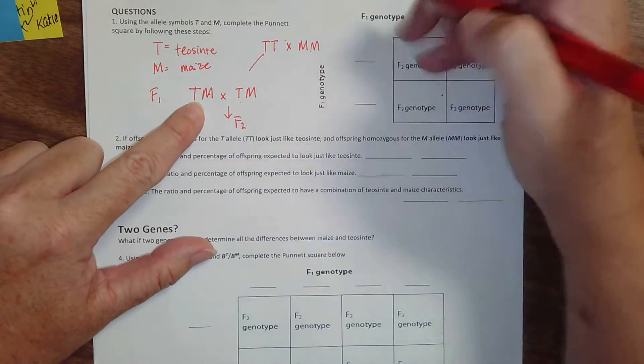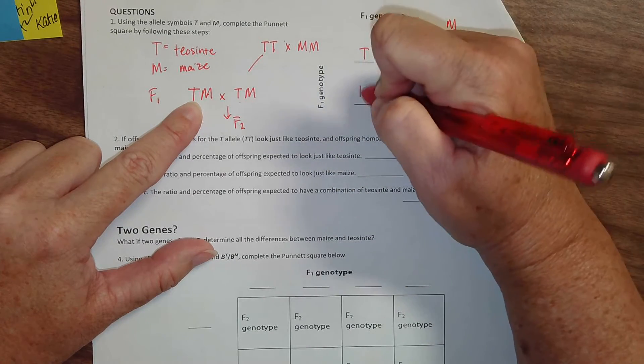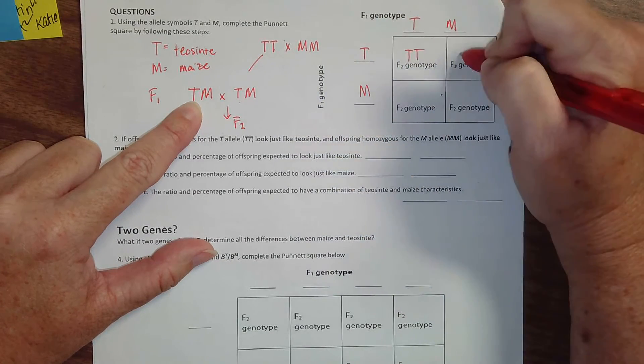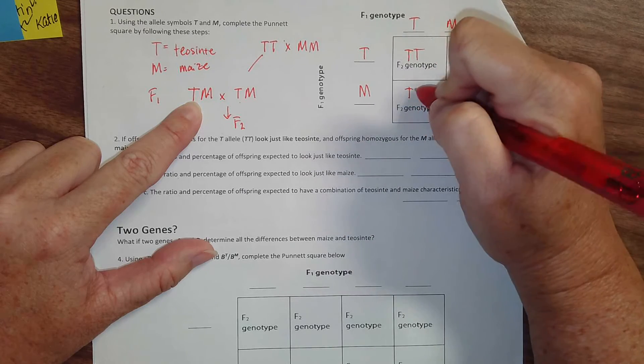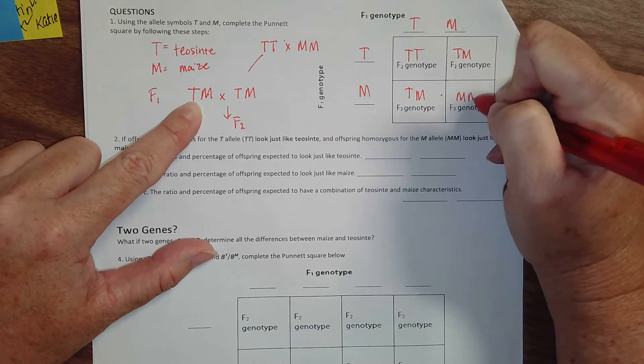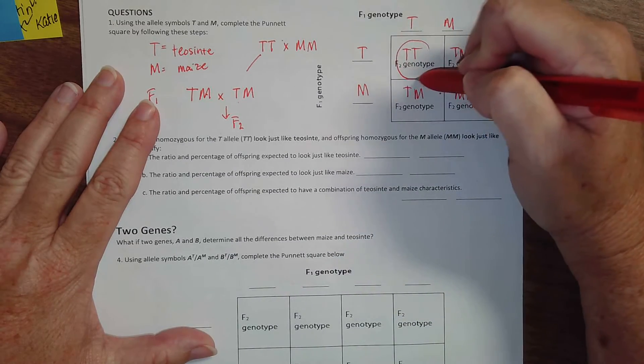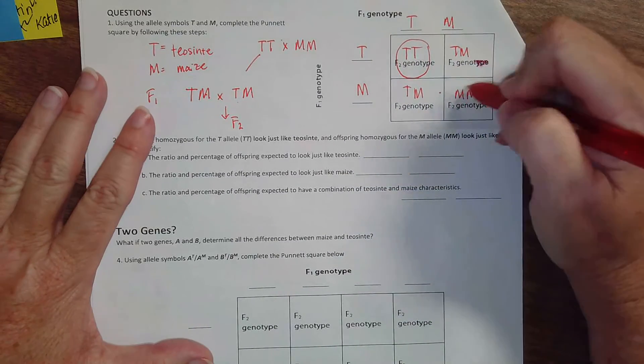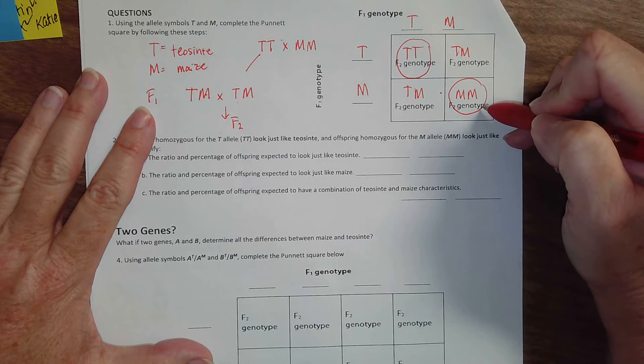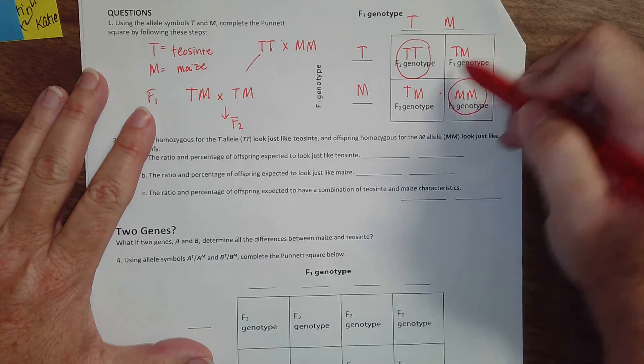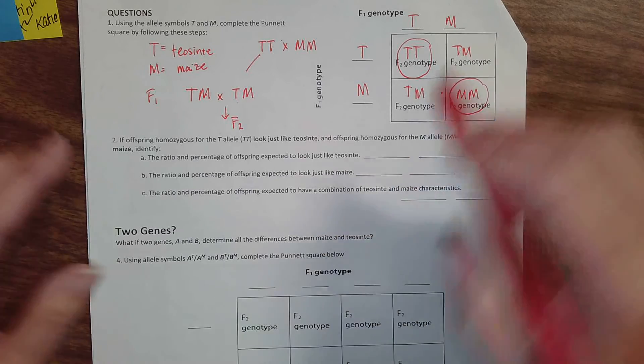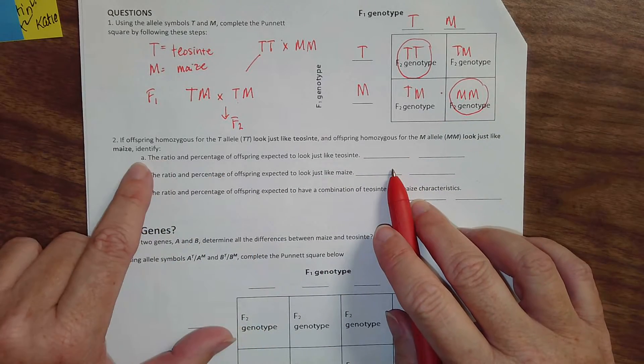So if this is our cross, here's what our Punnett square looks like. And I want you to start noticing patterns. One out of four looks like Teosinte. One out of four looks like maize. Half of them, two out of four, look like a hybrid. So you'll do your ratios here.